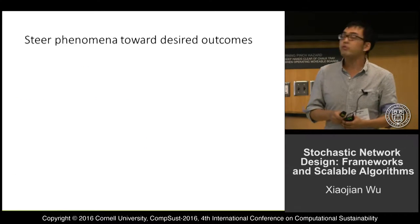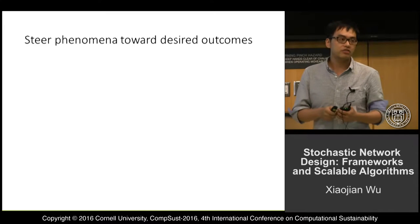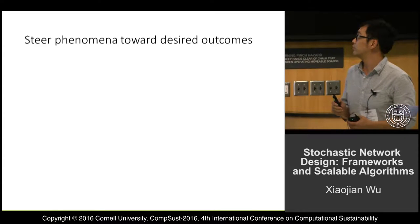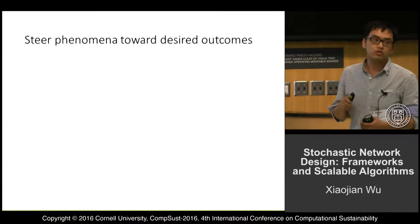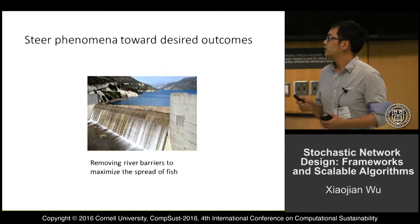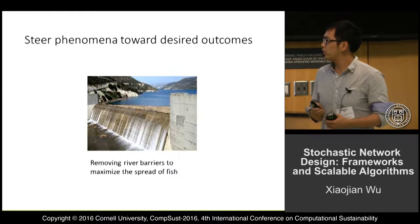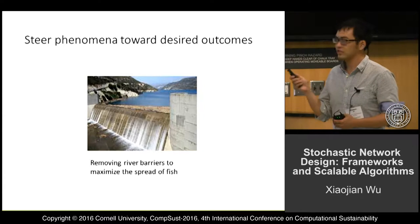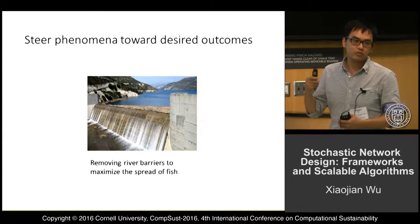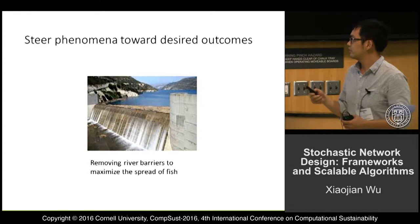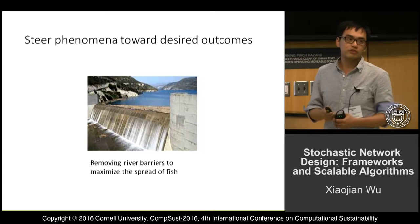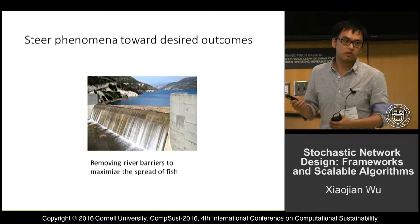For these phenomena, we may want to take some management actions or interventions to steer them towards our desired outcomes — for example, to maximize or encourage their spreading, or to control it. For the fish example, barriers will block fish movement and block them from accessing their historical habitats, but we may remove some of the river barriers to encourage their dispersal.